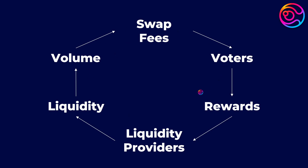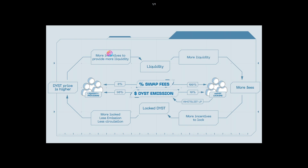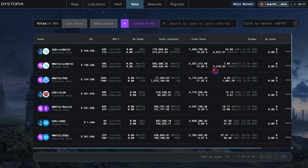This creates a sophisticated, tokenized game theory known as VE(3,3), or vote escrowed staking, whereby both liquidity providers and those who vote-lock their reward tokens are united under the same goal of producing the highest swap volume and therefore the highest swap fees. What keeps this system in balance is that the more DYST or Cone tokens locked, the lower the rate of inflation, and the less locked, the higher the rate of inflation. Also, those who both lock DYST or Cone and provide liquidity stand to earn the most, because they earn boosted incentives when providing liquidity and, of course, receive the swap fees from the pools that they voted on.